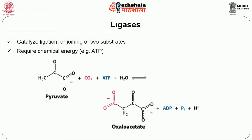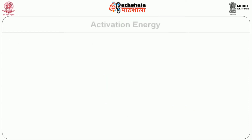Ligases, the last group, catalyze ligation — the joining of two substrates. This class of enzyme requires chemical energy in the form of ATP. For example, pyruvate in the presence of carbon dioxide, ATP, and water gives rise to oxaloacetate, with ATP being converted to ADP in the process.